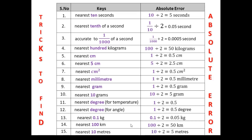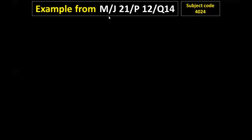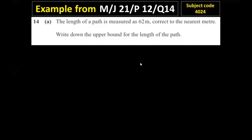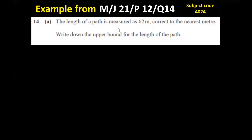Let's take some examples from a question from May/June 2021, paper 4024, question number 14. The length of a path is measured as 62 meters correct to the nearest meter. Write down the upper bound for the length of the path.